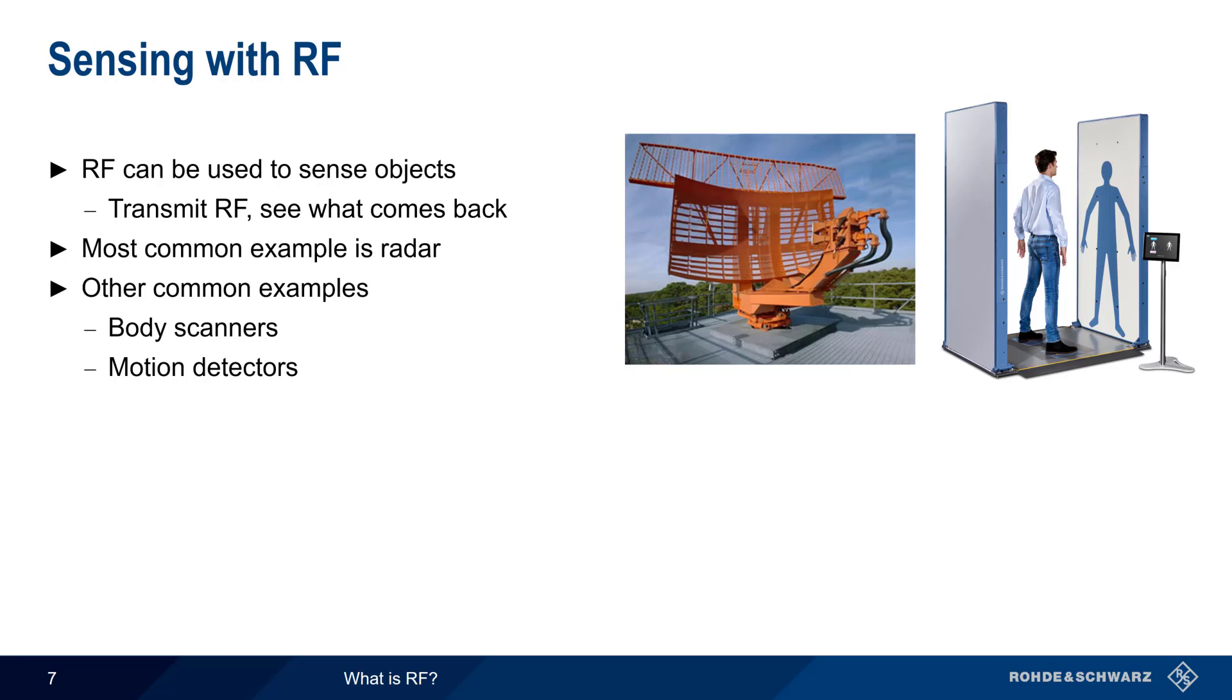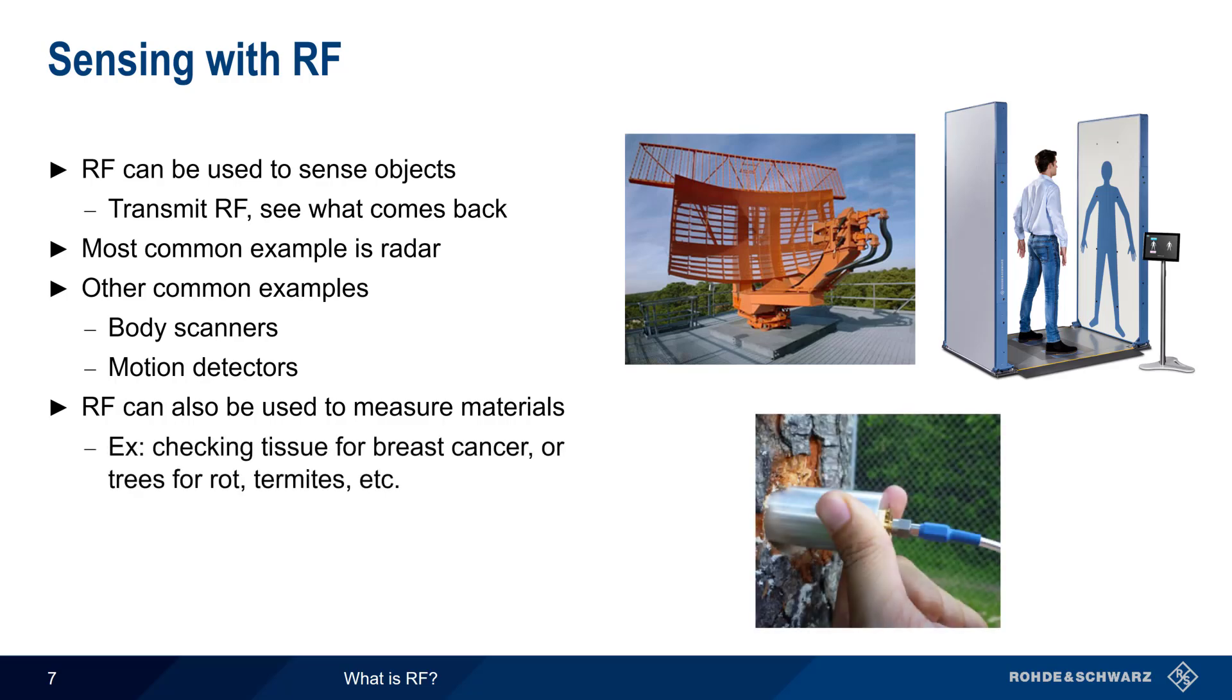A less well-known use of RF for sensing is something called material measurements. RF allows us to non-destructively determine certain properties of materials, such as checking tissue for the presence of breast cancer, or trees for the presence of rot, termites, etc.